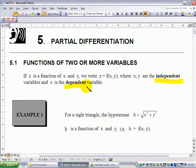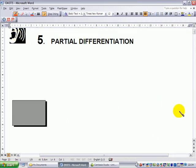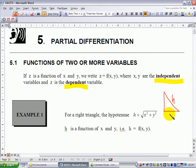Example 1: For a right triangle where the hypotenuse is h and the two sides are x and y,